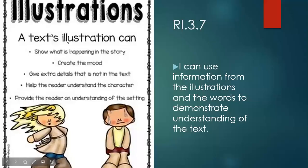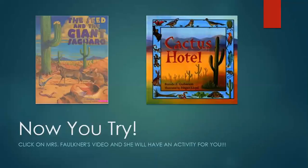Two books are actually on YouTube if you want to go read and listen to them: The Seed and the Giant Saguaro and Cactus Hotel. Cactus Hotel we used to do in third grade and it's a really cool story — it really helps you understand how animals come in and out of the cactus and why it's important to keep this ecosystem safe. Now you are going to click on Mrs. Faulkner's video and she will have an activity for you. Have a great day!